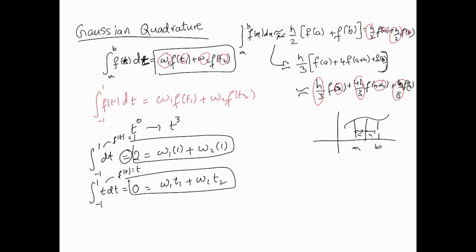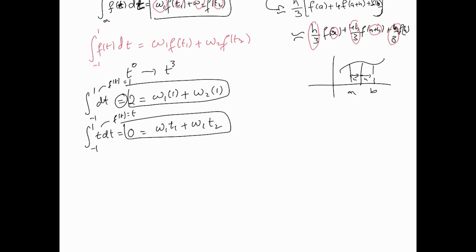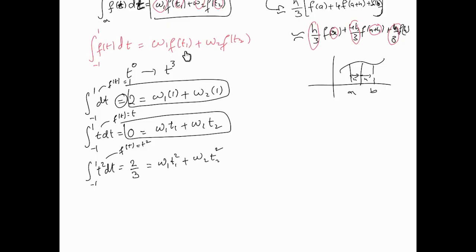For f(t) = t²: the integral from -1 to 1 of t² dt = t³/3 evaluated from -1 to 1 = 2/3. That gives equation three: w1·t1² + w2·t2² = 2/3. Remember, f(t) changes each time — it's 1, then t, then t² — so correspondingly we substitute 1, t1, t1² into the right-hand side.